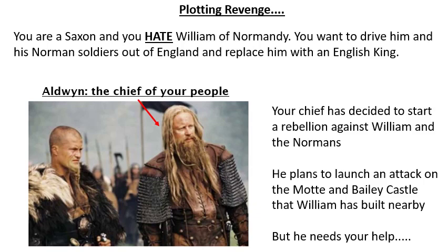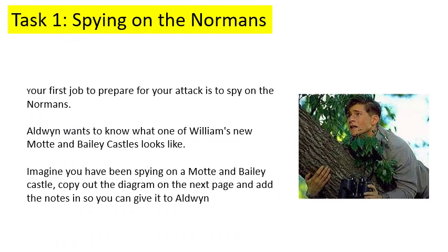Your chief has decided to start a rebellion against the Normans. He plans to launch an attack on the Mott and Bailey castle that William has built nearby, but he needs your help. Your first task is to spy on the Normans for Aldwin - he wants to know what one of William's new Mott and Bailey castles looked like. It is your job to draw a really good diagram of it, as if you've gotten close enough to spy. On the next slide is a diagram you're going to copy out and fully label to give to Aldwin. The picture on the right is from my favourite film of all time - if you know it, send me a comment on Show My Homework and tell me!